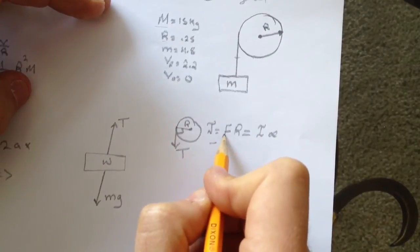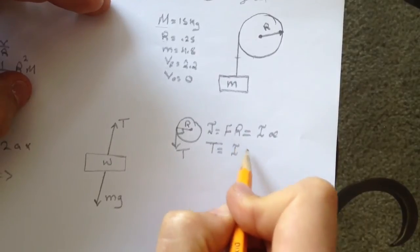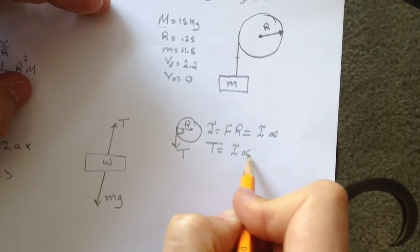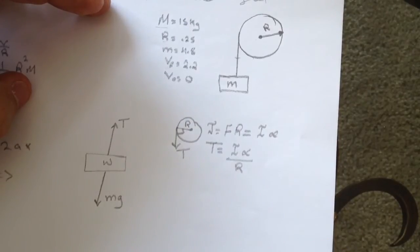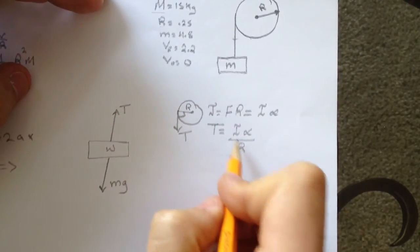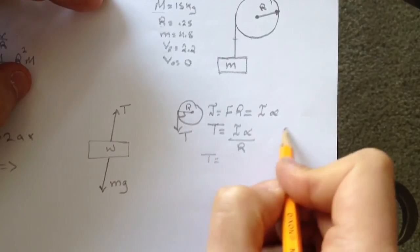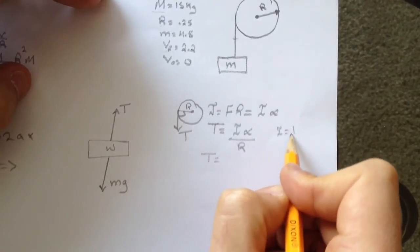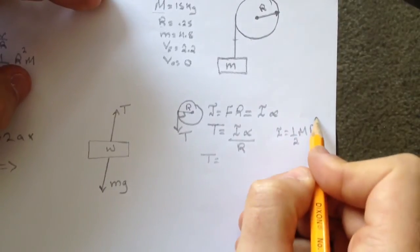The tension equals I times angular acceleration over r. The inertia for the disc is half Mr squared.